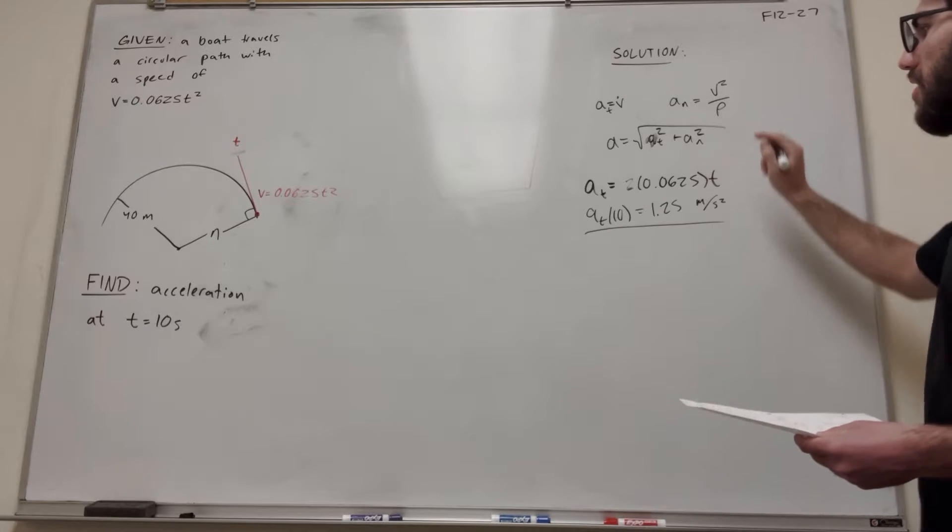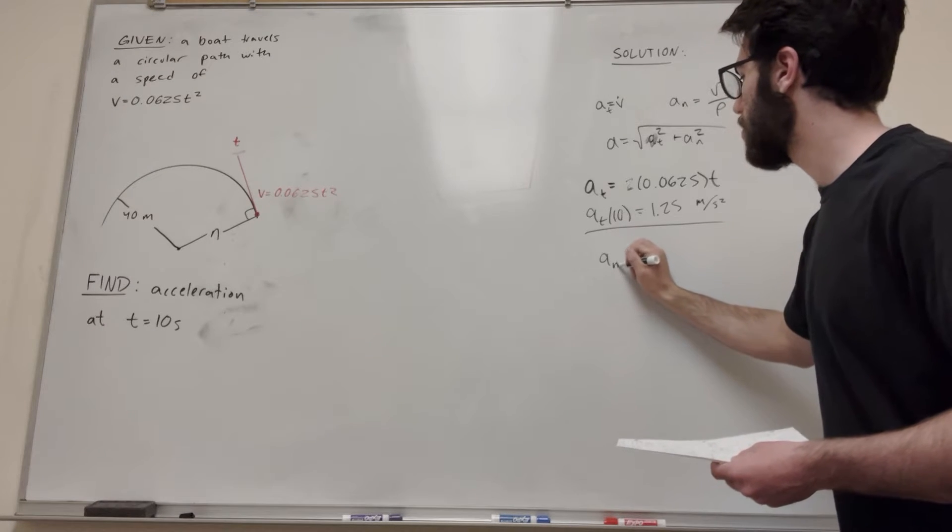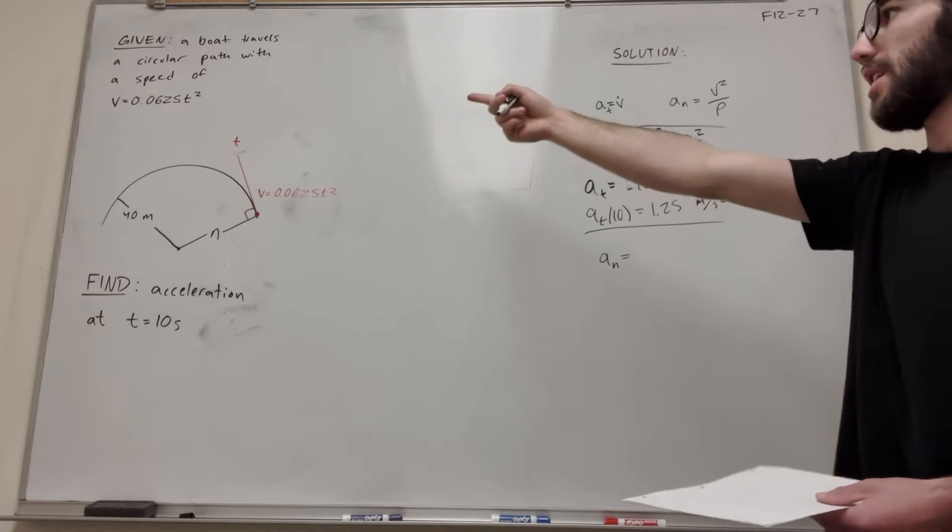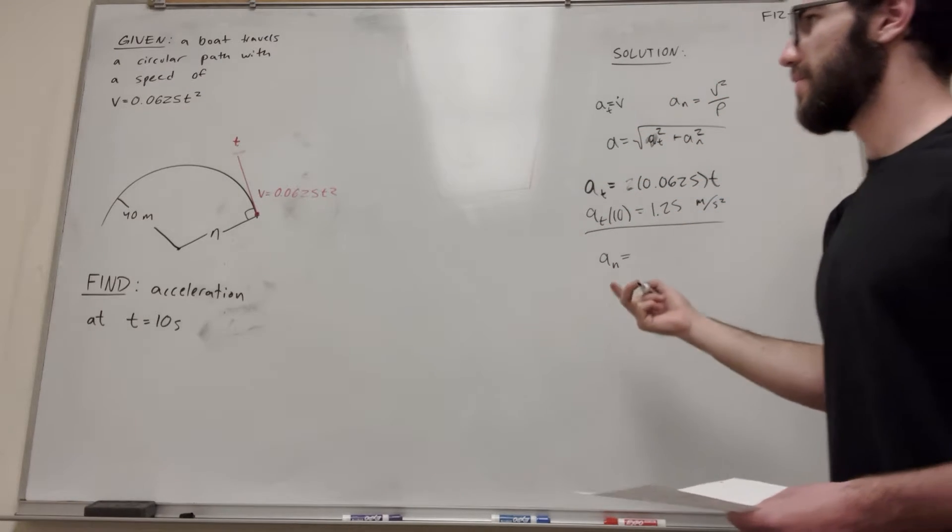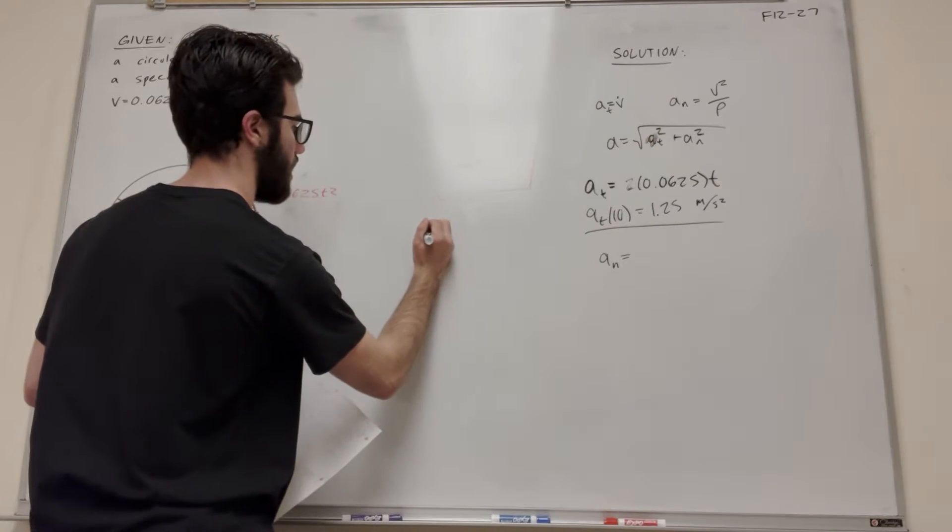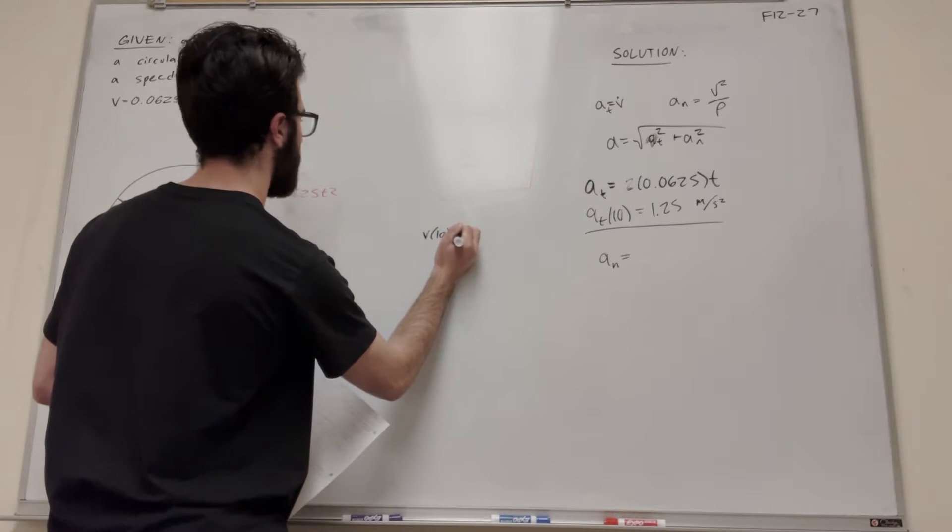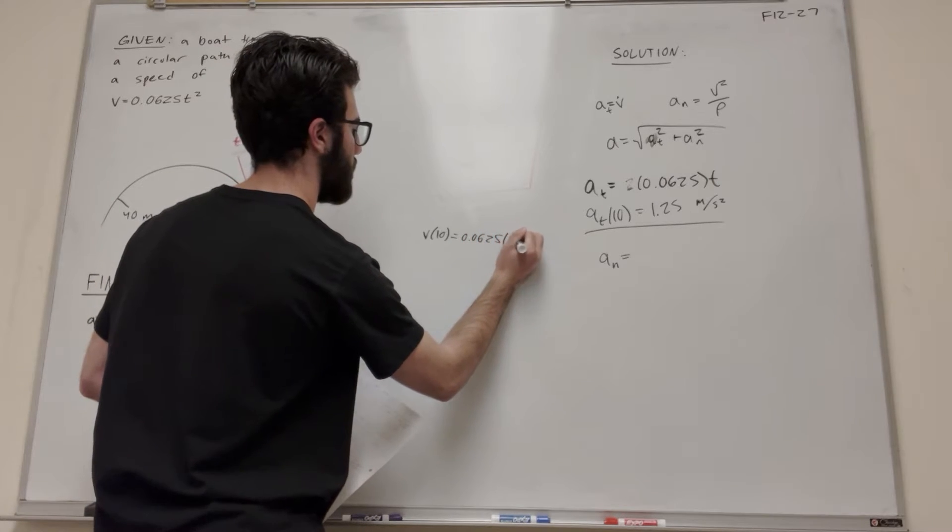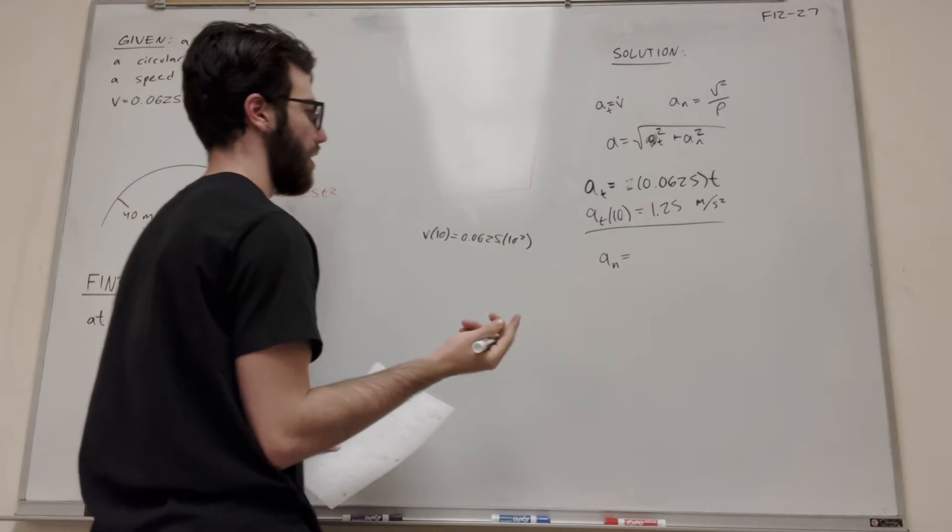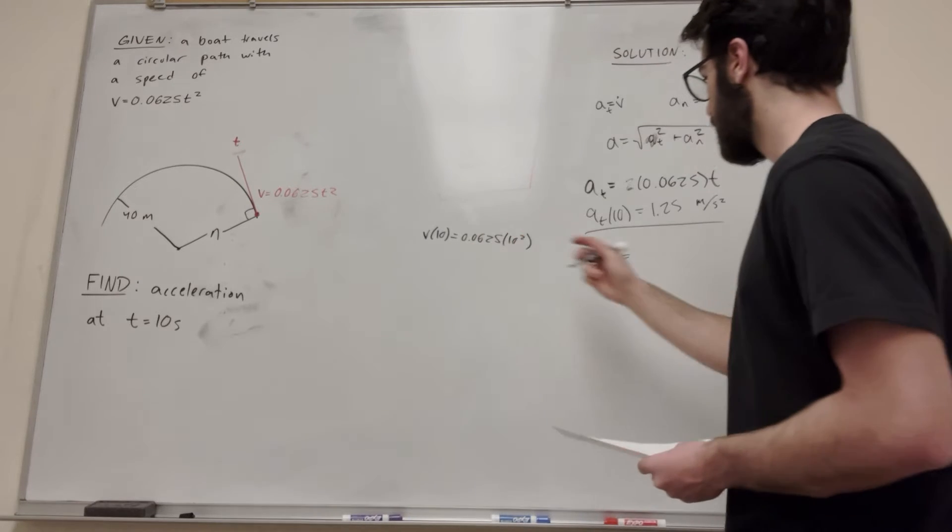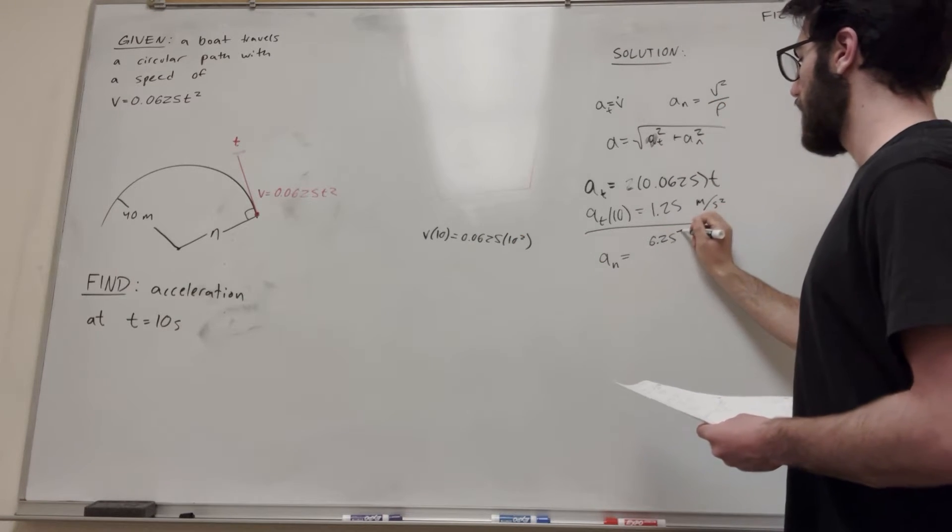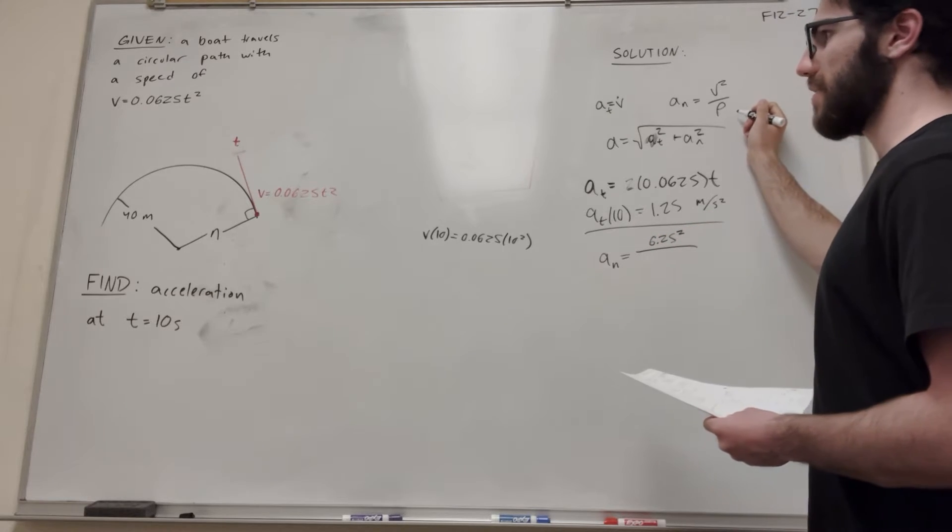Let's find normal acceleration. Acceleration normal, we're just going to use that equation, velocity squared. Well, we need to find the velocity at that time. To find the velocity at 10 seconds, it's just going to be 0.0625 times 10 squared. 10 squared obviously is 100, so that's going to break out. So it's going to be 6.25, and then we have to square it again over the radius of curvature.